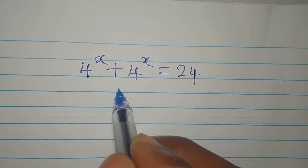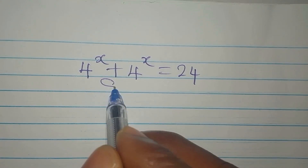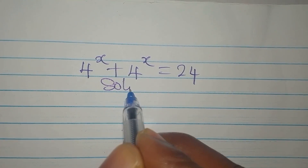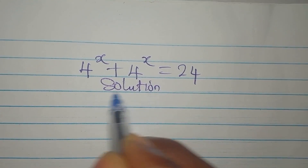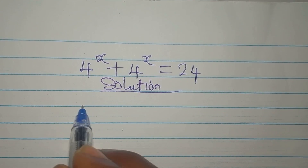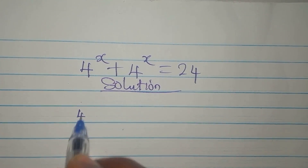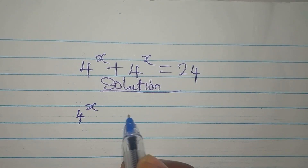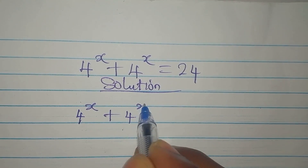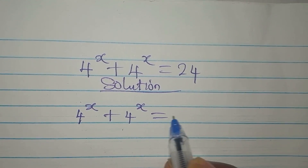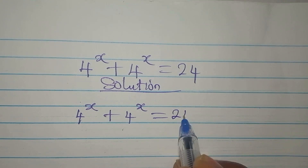Hello everyone. Let's provide the solution to this problem: we have 4 to the power of x plus 4 to the power of x equals 24.